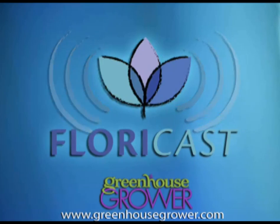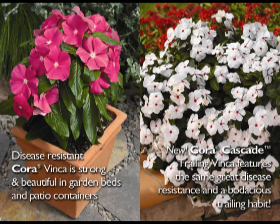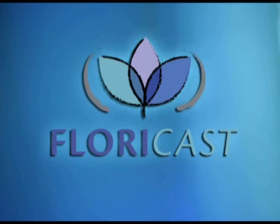Thanks for downloading this episode of the FloraCast series and thanks to our sponsor, Goldsmith. 18 years ago, Goldsmith founder Glenn Goldsmith decided to take on a challenge to create a vinca series that was resistant to disease. Gardeners have long loved vinca but often struggled with it in challenging weather. His goal was to improve the performance and durability of this garden favorite. At last, a success — a vinca resistant to aerial Phytophthora was born. Cora and Cora Cascade vinca are strong, beautiful, and long-lasting in the garden. Come back next week for the next edition of the FloraCulture podcast series.